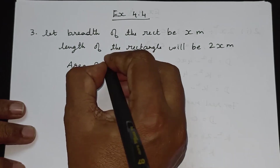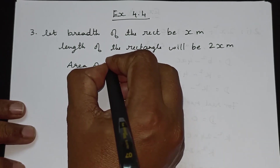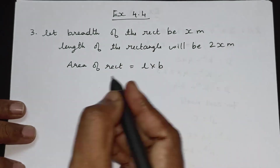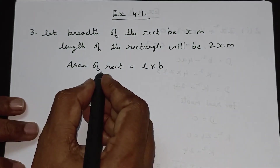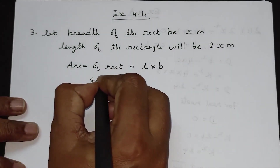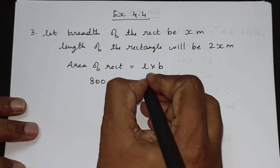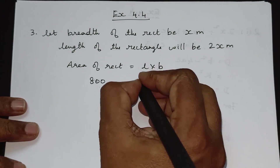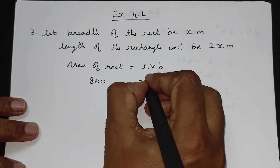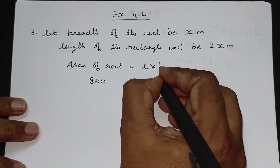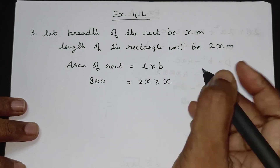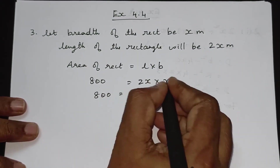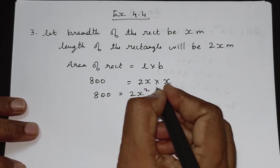The area of a rectangle formula is L into B. So, area equals 2x into x. So, 800 is equal to 2x², which gives us 2x².